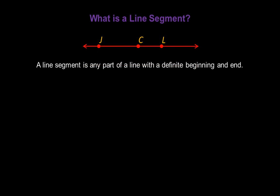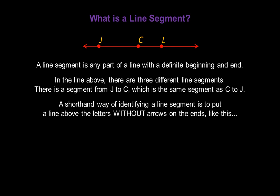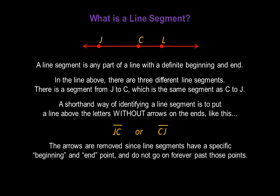What is a line segment? A line segment is any part of a line with a definite beginning and end. In the line above, there are three different line segments. There's a segment from J to C, which is the same segment as C to J. A shorthand way of identifying a line segment is to put a line above the letters without arrows on the ends. We could call it Line Segment JC with the line segment symbol above it, or swap the letters and call it CJ. The arrows are removed since line segments have a specific beginning and end point, and they do not go on forever past those points.